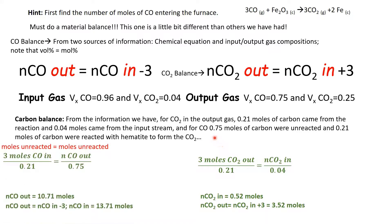Setting up the ratio: moles unreacted equals moles unreacted, so (3 moles CO in) / 0.21 = (N moles CO out) / 0.75. Solving this gives the number of moles of CO out equal to 10.71 moles. From the statement that moles CO out = moles CO in minus 3, we figure out that 13.71 moles of carbon monoxide entered the system — 3 of which were consumed by the chemical reaction to make CO2.